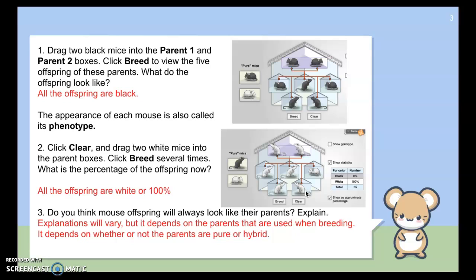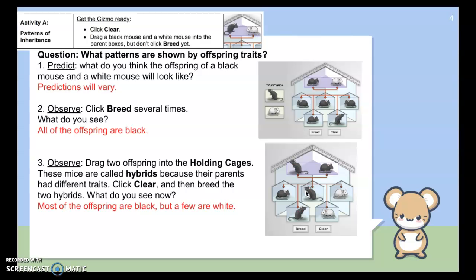So number three says, do you think the mouse offspring will always look like their parents? Well, from what we've seen so far, yes, but that's not always the case. If the parents are pure, like in Mendel's results, where they only have one kind of allele, meaning they're both the same type of allele. If they're pure, then yes, the offspring will look the same. But if the parents are hybrid, meaning they have one dominant allele and one recessive allele, we don't know which one will get passed down. And then we might see some differences.